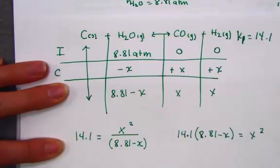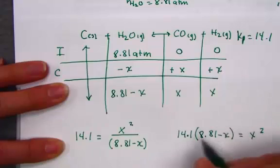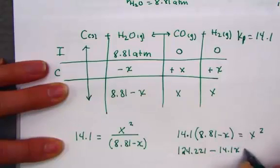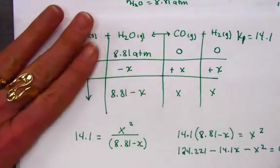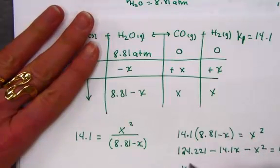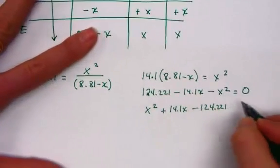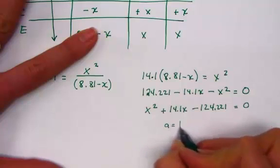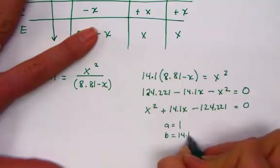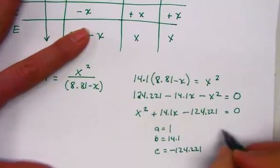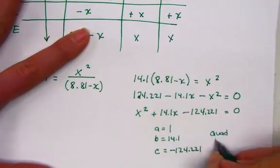Let's hit that together, 14.1 times 8.81. It shows me a value of 124.221 minus 14.1x minus x squared gives me the value of zero. Working into the quadratic equation, I will flip the signs and rewrite. Positive x squared plus 14.1x minus 124.221 equal zero. Our a value is 1, b is 14.1, and c is negative 124.221.